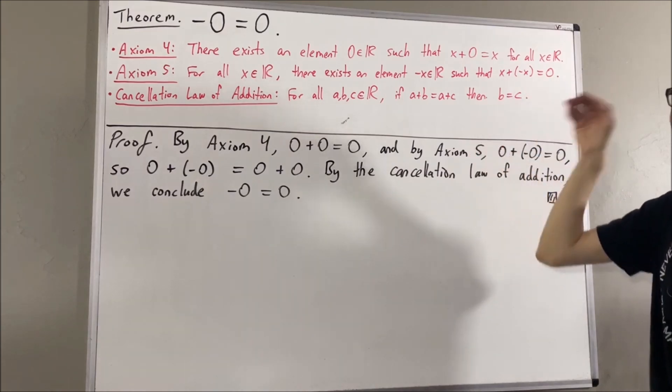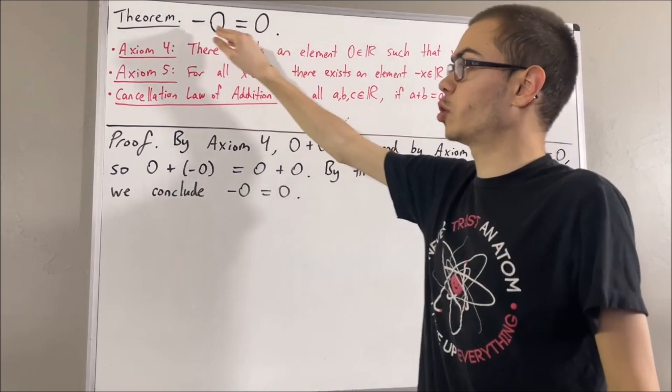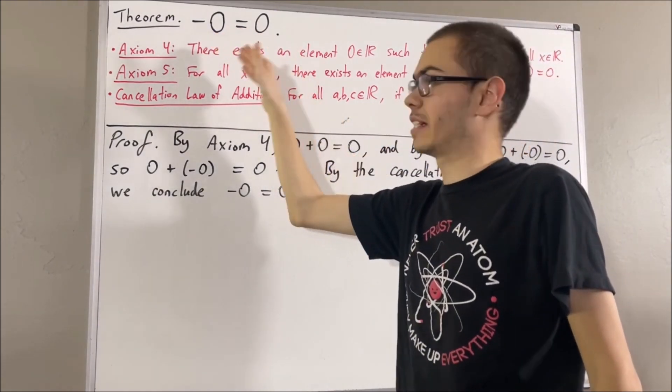The reason why is because axioms 1 through 7 tell us that the set of real numbers form a field. But there are fields with elements in it, with the property that the element is equal to the negative of itself, but that element is not equal to zero.